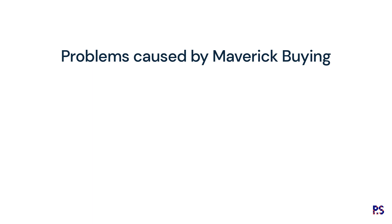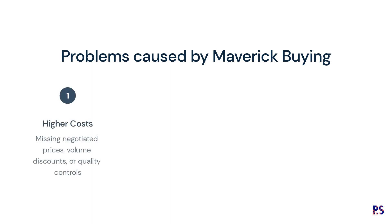Maverick buying is a problem for companies for several reasons. Firstly, it can lead to higher costs, as purchases made outside of the normal procurement process may not be subject to the same negotiated prices, volume discounts, or quality controls as purchases made through approved suppliers. This can result in higher prices, lower quality goods or services, or other hidden costs that can add up over time.